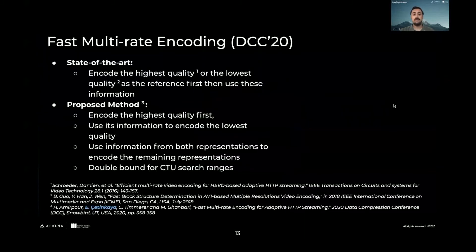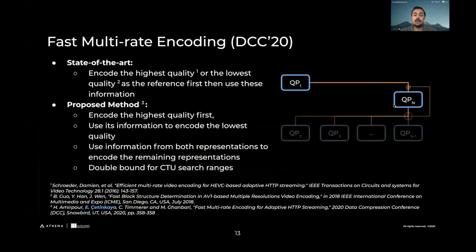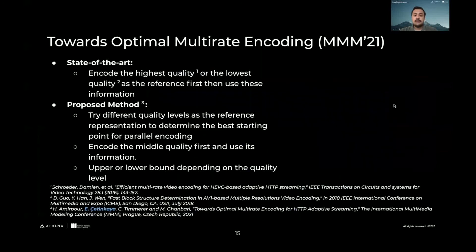The first existing work was the fast multi-rate encoding paper for the DCC 2020 conference. Here, we encode the highest quality representation and use this information to encode the lowest quality one, and then use the information from both to encode the remaining representations. This resulted in the following time graph. We analyzed the results and saw that the parallel encoding performance was not good enough because we couldn't improve the highest encoding time complexity.